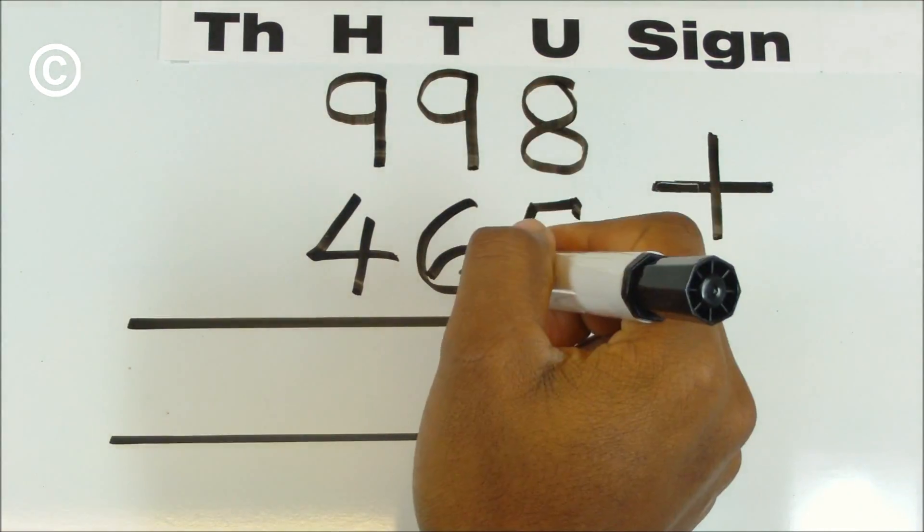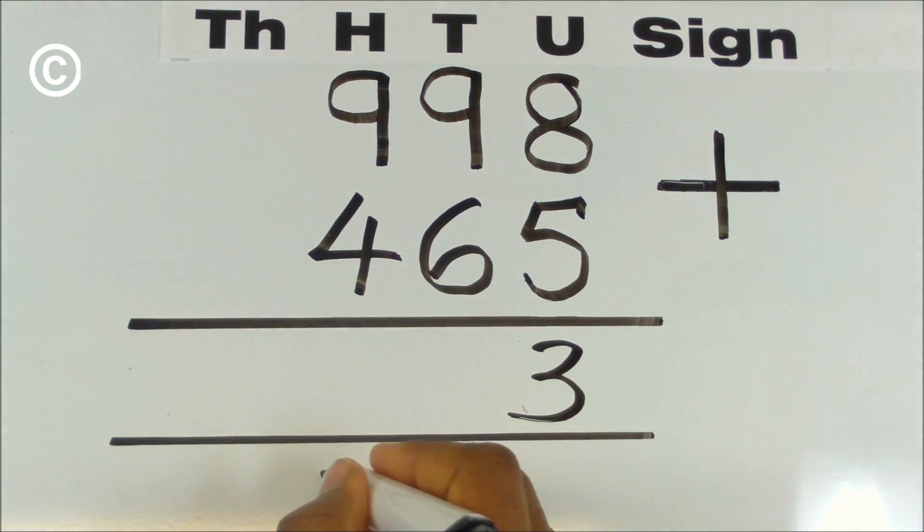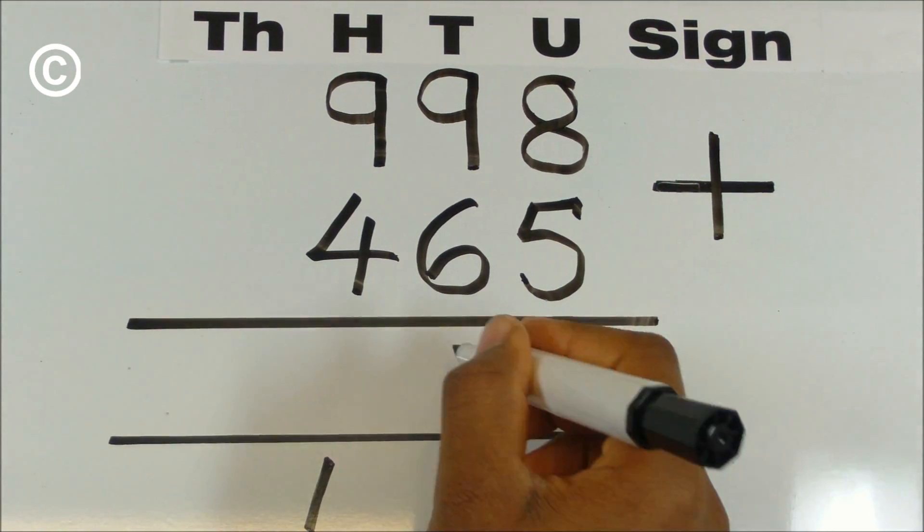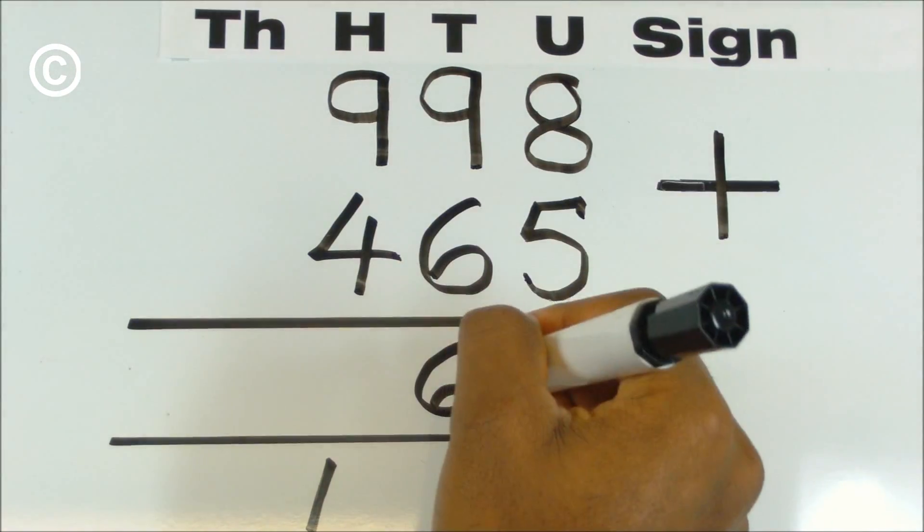9 plus 6 plus 1 is 16. One down in the hundreds column, 6 in the tens column.